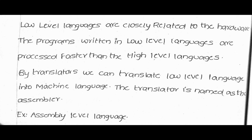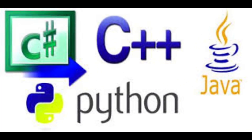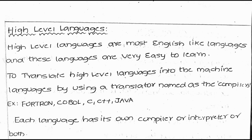High-level language is like English language — it uses English-like words, making it much easier to learn than low-level language. In low-level language we deal with binary digits and bits which are hard to understand, but high-level language is more natural. To translate high-level language into machine language, we use a translator called a compiler.